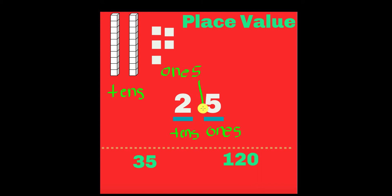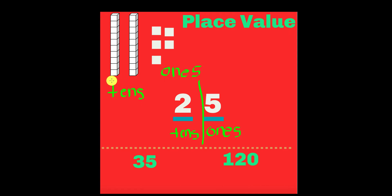Sometimes I like to put a little line down the middle so we can really see that clearly. When we're looking at the number 25, we know that the two is in the tens place and the five is in the ones place. So if we look up here in our little corner, what does that look like visually using manipulatives? These cubes are called manipulatives.